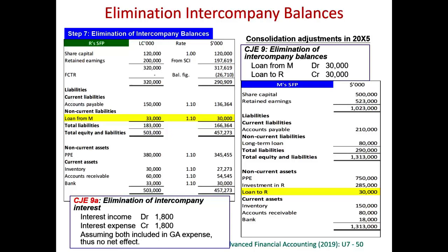Don't forget that we have an intra-group loan balance and intra-group interest income and expense to eliminate. In the subsidiary's books there is a loan liability, so we debit it away. In the parent's books there is a loan receivable, so we credit it away. This eliminates the intra-group balance. We also eliminate intra-group interest income and expense: the interest rate is 6% on $30,000, which is $1,800. So we debit away interest income and credit away interest expense.